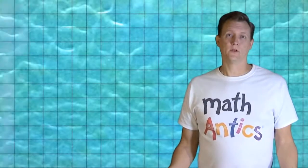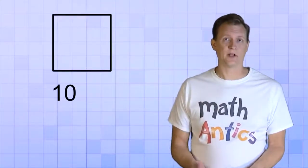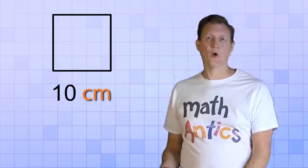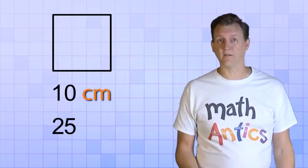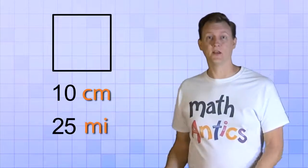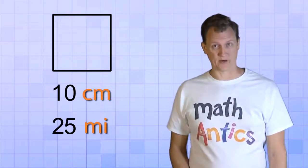For example, the perimeter of a shape wouldn't be just 10, but it could be 10 centimeters. Or instead of being just 25, it could be 25 miles. The units are really important when you're talking about perimeter.